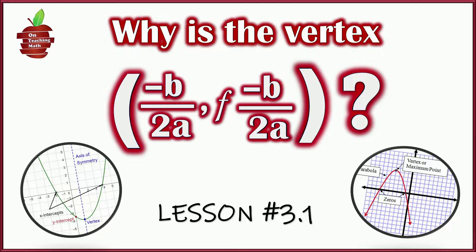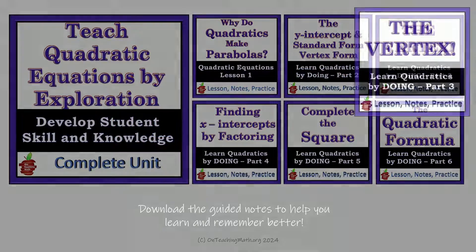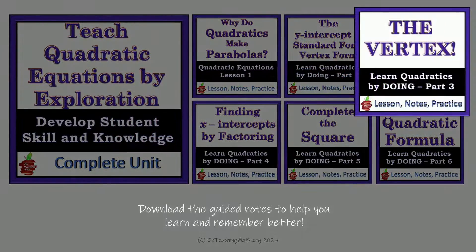Well hello and welcome everybody. In this video we're going to be talking about why the vertex is negative b over 2a, and then f of negative b over 2a. This is the third part in our series on quadratic equations. If you're a student learning this and you'd like some guided notes, you can grab those — they are linked in the description down below.